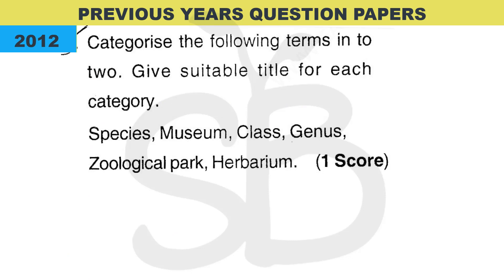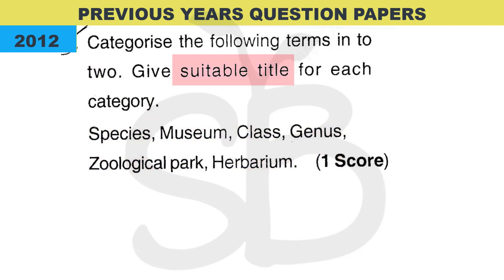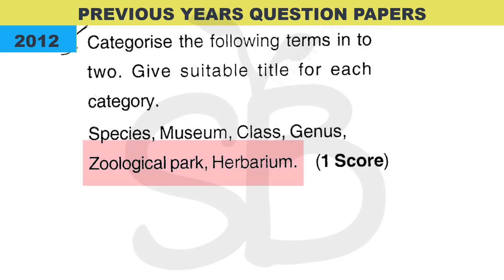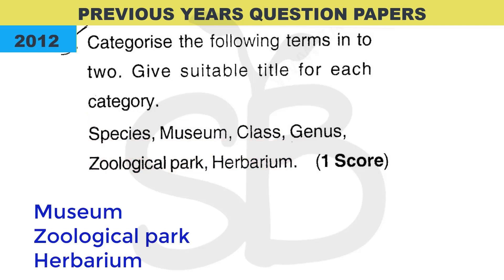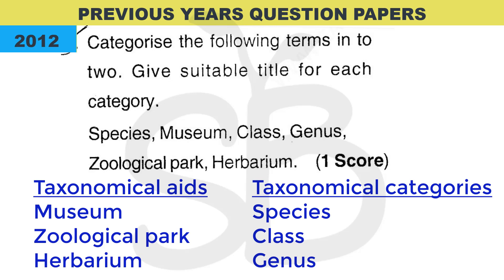Another 2012 question: 'Categorize the following terms into two groups and give suitable titles for each category.' The terms are Species, Museum, Class, Genus, Zoological Park, and Herbarium. Museum, Zoological Park, and Herbarium are Taxonomical Aids. Species, Class, and Genus are Taxonomical Categories.